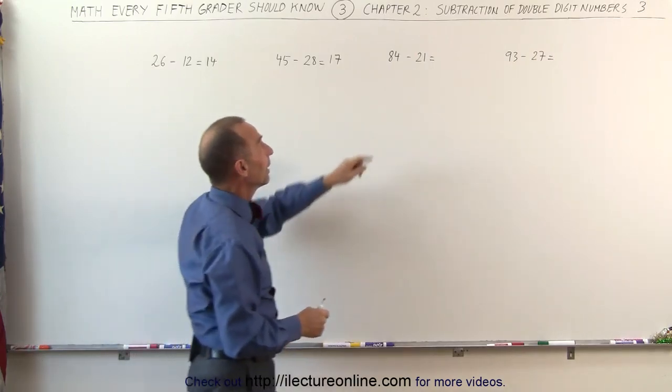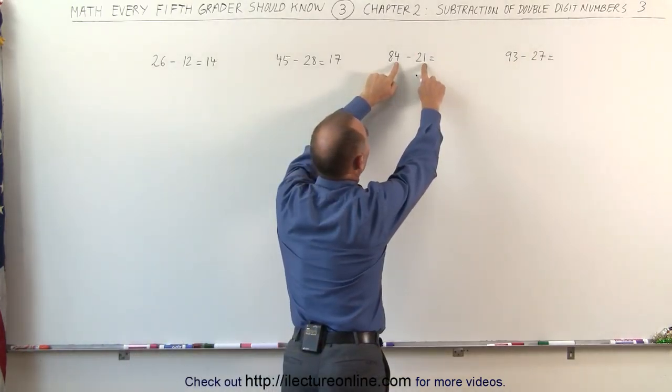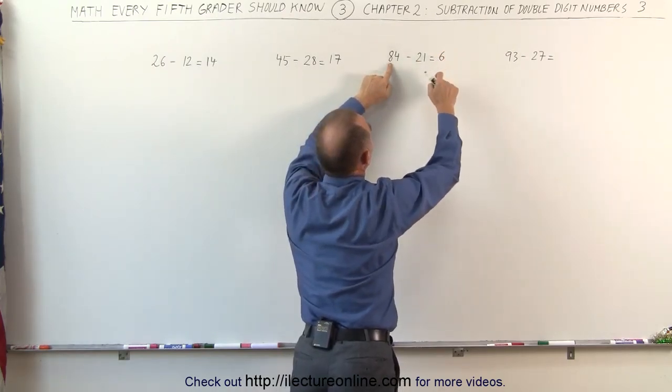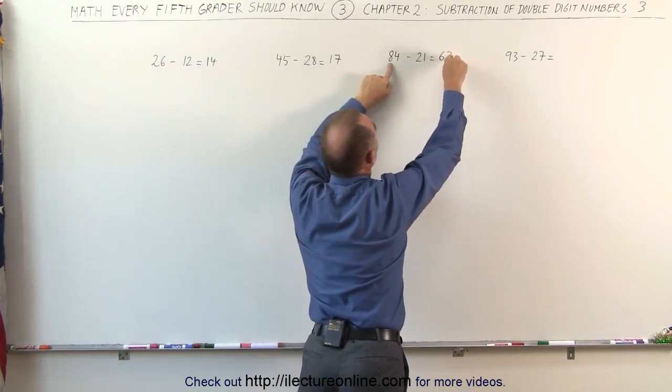84 minus 21. I realize that the 1 is smaller than the 4. So I simply subtract the 2 from the 8. That gives me a 6. And I subtract the 1 from the 4. That gives me a 3.